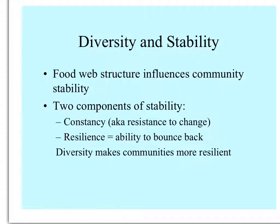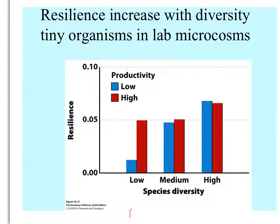Diversity — having a greater number of species — makes communities more resilient, able to recover from a disturbance. In this example of microorganisms in a lab, as species diversity increases from low to high, resilience increases also. The trend is especially obvious in situations of low productivity; in higher productivity, the effect is not quite as great.